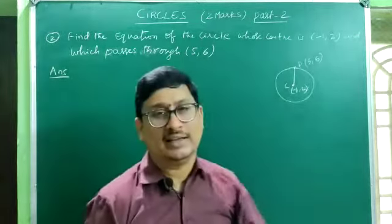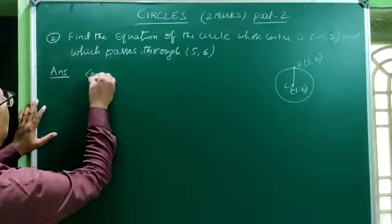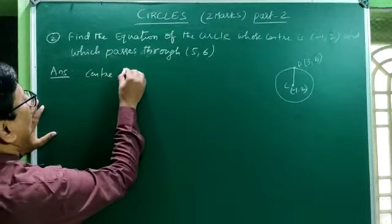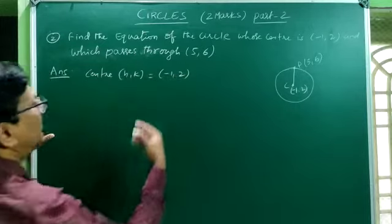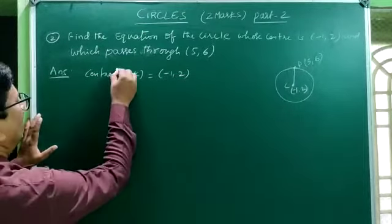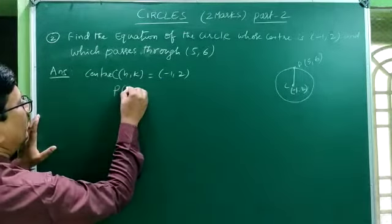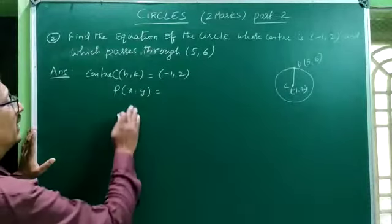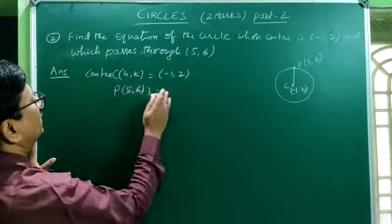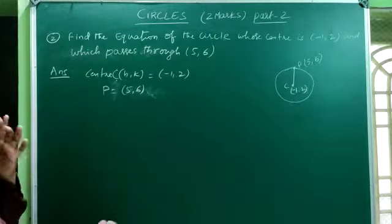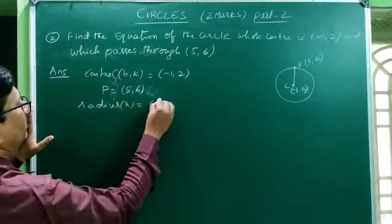We have to find the radius of the circle. Let center C = (h, k) = (−1, 2) and point P = (x, y) = (5, 6). Radius R = CP.